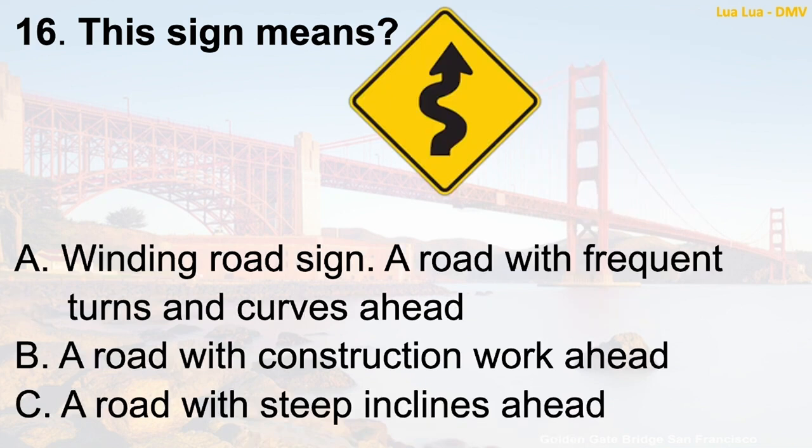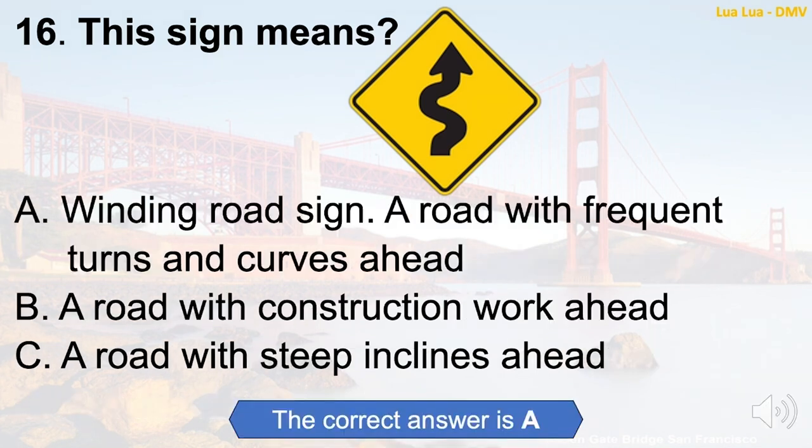Question 16: This sign means — A. Winding road sign — a road with frequent turns and curves ahead. B. A road with construction work ahead. C. A road with steep inclines ahead. The correct answer is A: Winding road sign — a road with frequent turns and curves ahead.